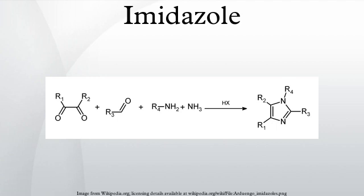Related heterocycles include: benzimidazole, an analogue with a fused benzene ring; dihydroimidazole or imidazoline, an analogue where the 4–5 double bond is saturated; pyrrole, an analogue with only one nitrogen atom in position one; oxazole, an analogue with the nitrogen atom in position one replaced by oxygen; thiazole; pyrazole, an analogue with two adjacent nitrogen atoms; and triazoles, analogues with three nitrogen atoms. See also: 1-methylimidazole and 4-methylimidazole.